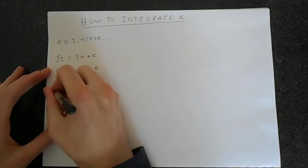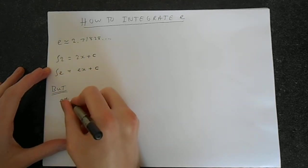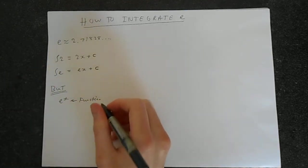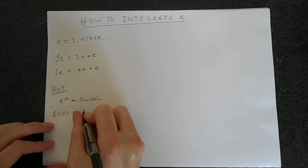But here's the difference. Say we've got something like e^x. Now that is a function. What do we mean by a function? Well, we could write f(x) = e^x.